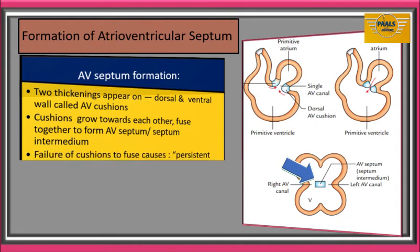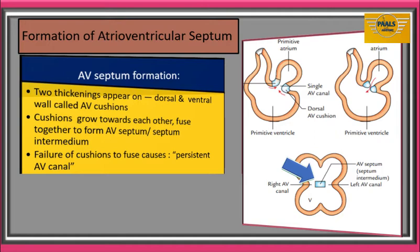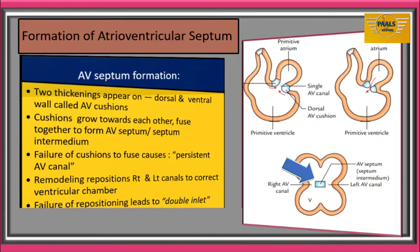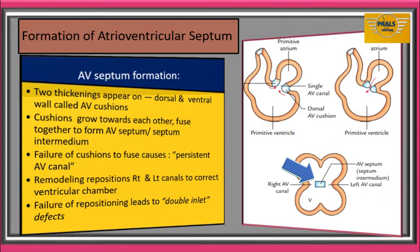Failure of these cushions to fuse will cause a defect called persistent AV canal. This is common in Down's syndrome. Remodeling will bring the new right and left AV canals into alignment with the future right and left ventricles. Failure of this realigning process will lead to another defect called the double inlet defect. We will take this defect in more detail in our clinical correlate section.